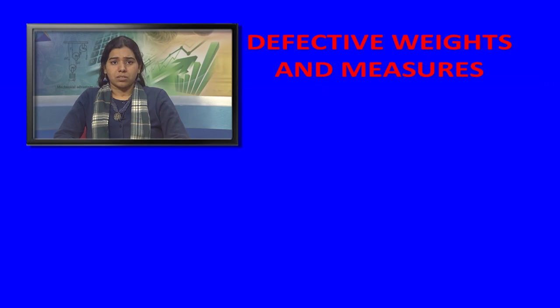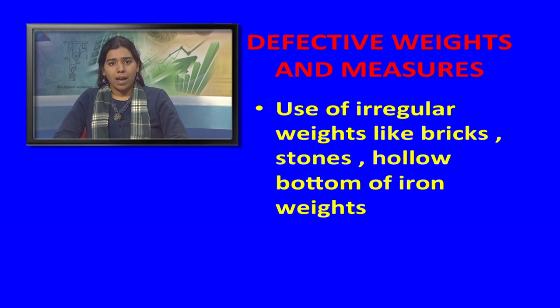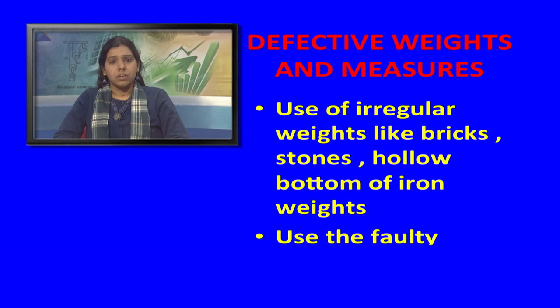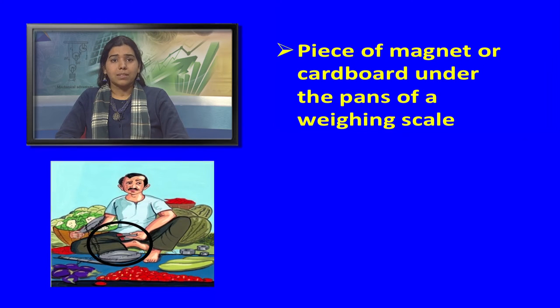Seasonal unavailability is also used to induce price rises. Defective weights and measures involve use of irregular weights like bricks, stones, or hollow-bottom iron weights that resemble one kg. Defective weights and measures are used by hawkers and vegetable vendors, along with faulty weighing machines using a piece of magnet or cardboard placed under the pans of a weighing scale.